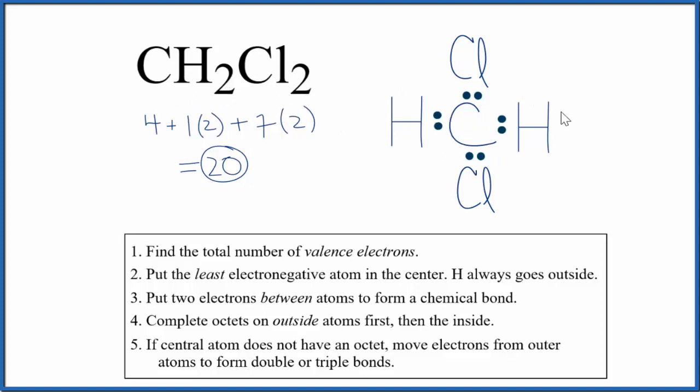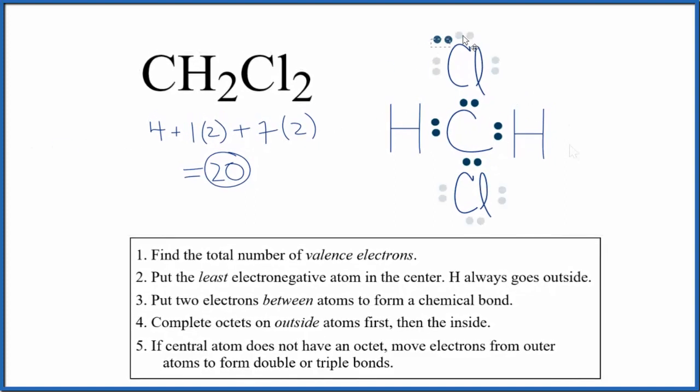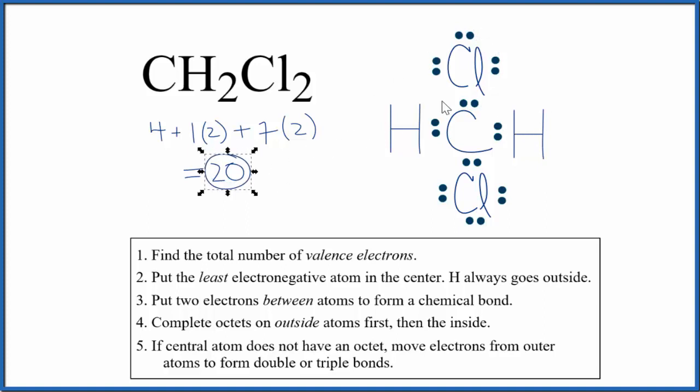Hydrogens only need two valence electrons, so they're good. Let's complete the octets around the chlorines. So at this point, we've used 20 valence electrons. We have octets on the chlorine, carbon, and then this chlorine down here. Each hydrogen has two.